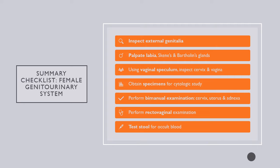Your objective assessment will include inspection of the external genitalia. If there are complaints, you would palpate the labia and the Skene and Bartholin glands. Advanced practice nurses would use a vaginal speculum to inspect the cervix and vagina. Any nurse can obtain specimens for cytologic study. Manual examination of the cervix, uterus, and adnexa is typically reserved for advanced practice nurses, unless you're an OB nurse doing a cervical check on a laboring patient. Rectovaginal examination is also usually reserved for advanced practice nurses.